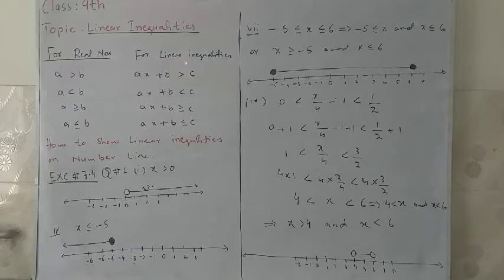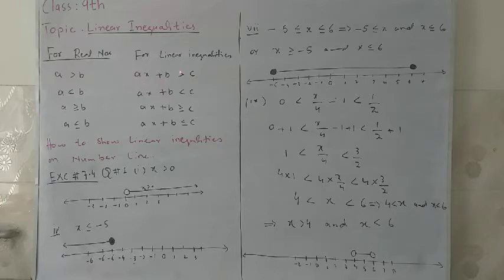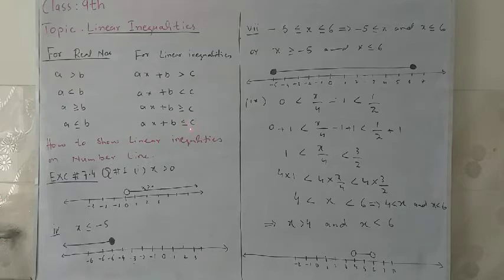When we have linear inequalities, we have four possibilities: AX plus B is greater than C, AX plus B is less than C, AX plus B is greater than or equals to C, or AX plus B is less than or equals to C. We are using a linear equation and writing it as an inequality, so it becomes a linear inequality.